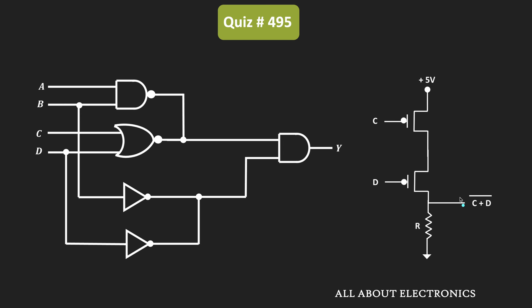If any one of the inputs is 1, then the output of the NOR gate will become 0. For example, if C input is 0 and D input is 1, then the first PMOS transistor will turn on while the second PMOS transistor remains off and stays in the open condition. In that case, through the resistor, the output node gets connected to the ground terminal, making the output of this logic gate 0. This is how the circuit works as a NOR gate.